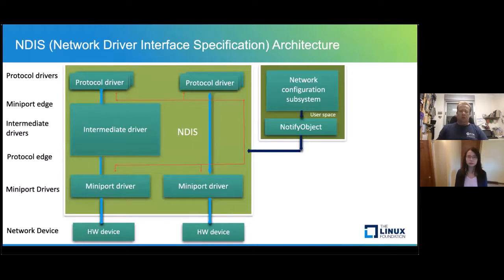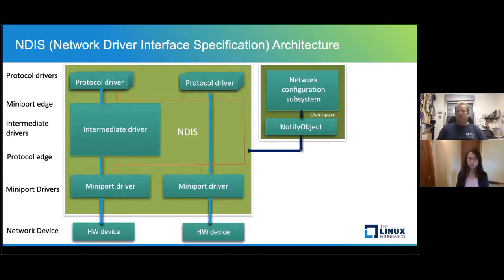Now let's talk about Windows terms and how the network driver architecture looks in Windows. You'll hear a lot during this presentation about NDIS — the Network Driver Interface Specification. It's also the ABI for network drivers and the architecture of network drivers in the kernel. There is NDIS.sys, which is a Microsoft driver you can see in the Windows kernel that implements part of the NDIS functionality.